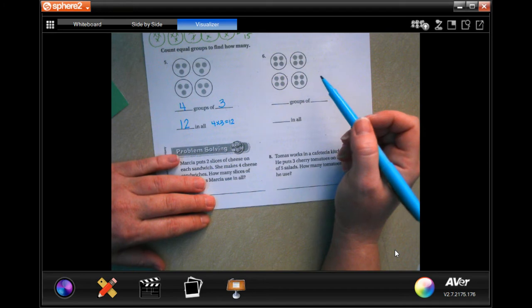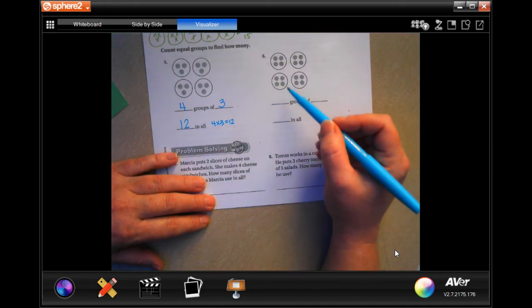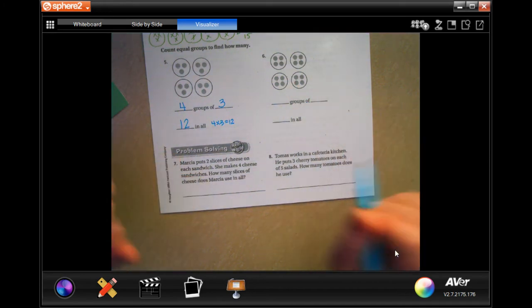You guys go ahead and do number six. How many groups are there? How many are in each group? And then how many are there at all?